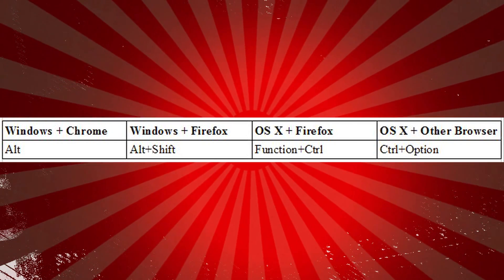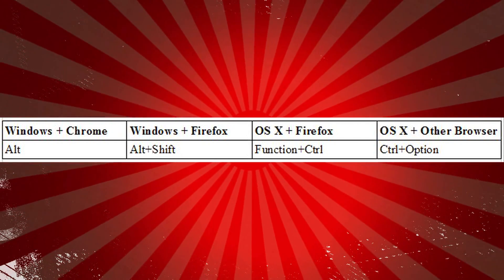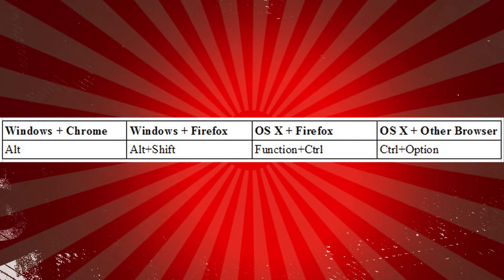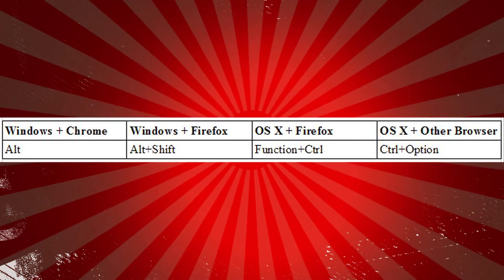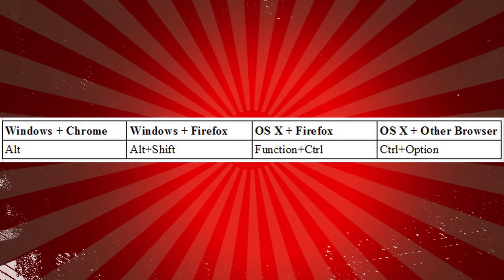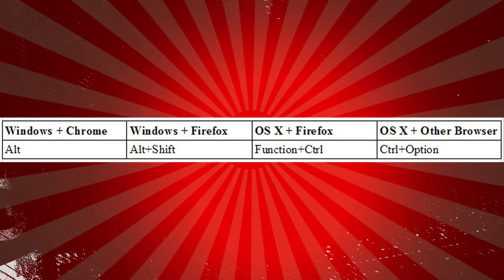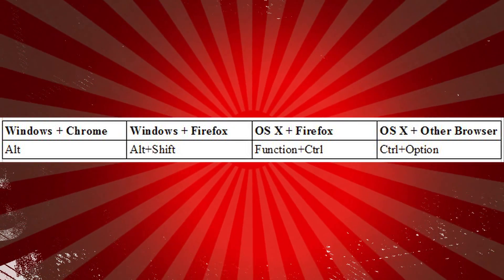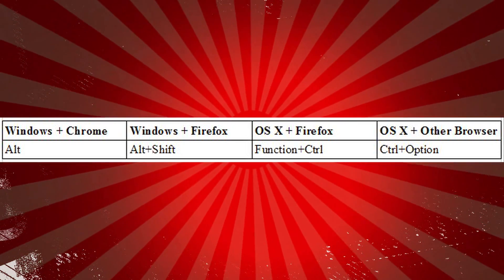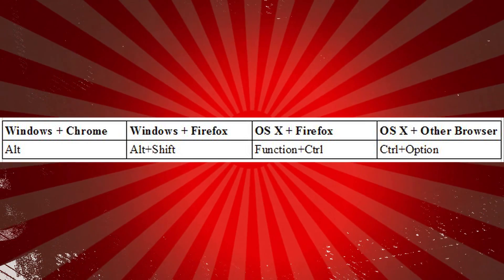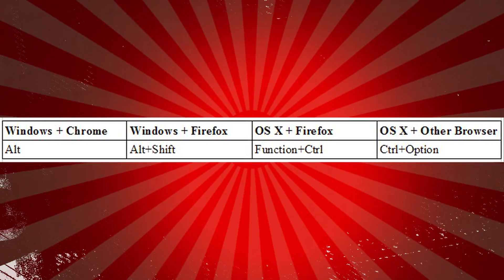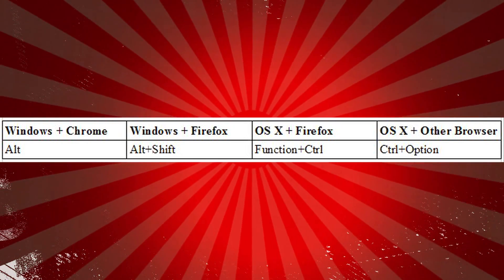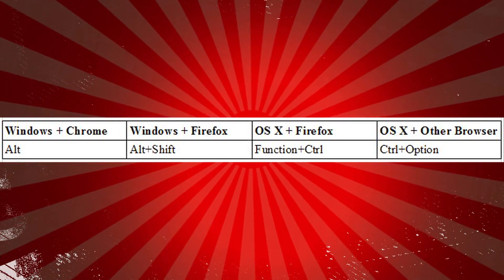Depending on what browser and OS combination you're using, you'll use different modifiers for these shortcuts. For Chrome and Windows, you'll just need the Alt key. For Firefox and Windows, you'll use Alt Shift. For Firefox and OS X, you'll use Function Control. And for all other browsers on the Mac, you'll use Control Option. Now that you've got those down, just combine them with the following keys.